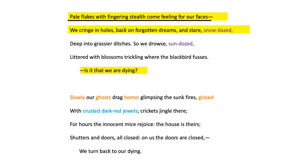In the first line of stanza six, we have assonance of long O sounds, which slows the speed at which the reader reads the line. This may reflect the journey of these young men, because their journey, either in war or towards death, was slow and painful. In line 27, we have fire being described as 'crusted dark red jewels,' which suggests that the fires are beautiful but, like jewels, offer no warmth or comfort. The colour dark red could represent dried blood, which may symbolise the death and misery of soldiers who have lost their hope and idealism because of their terrible experiences.